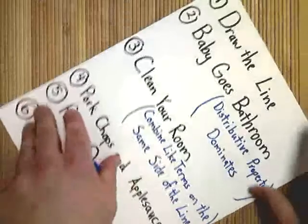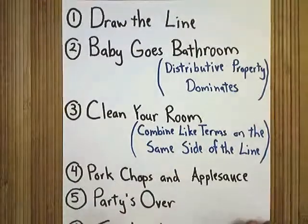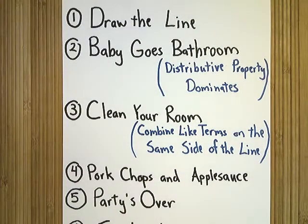This is our little key code for solving problems. The first step to solving an equation is draw the line. Drawing the line means that you're going to draw a line right down the middle between one side of the equation and the other, so through the middle of the equal sign.